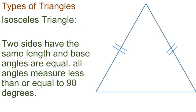Types of Triangles: Isosceles triangle. Two sides have the same length and base angles are equal. All angles measure less than or equal to 90 degrees.